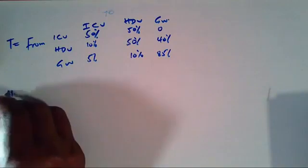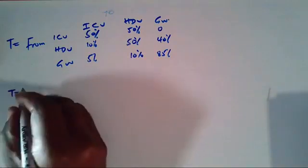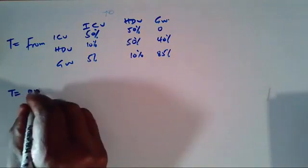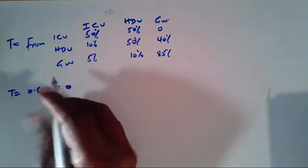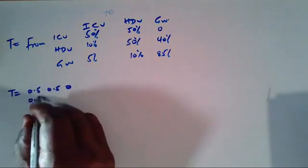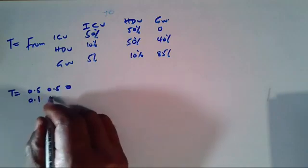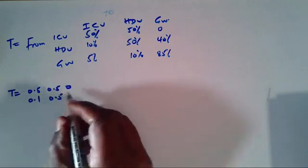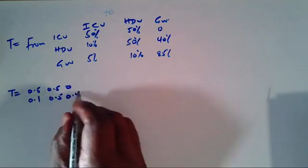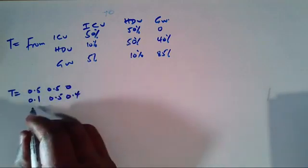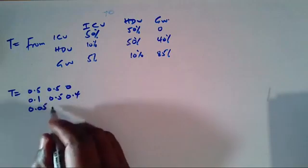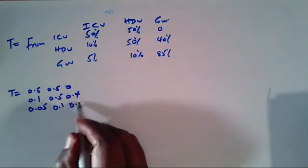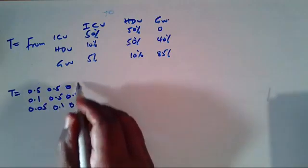Now I want to capture this transition matrix T in decimal form. So T will be: row ICU: 0.5, 0.5, 0; row HDU: 0.1, 0.5, 0.4; row General Ward: 0.05, 0.1, 0.85.